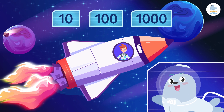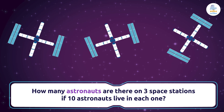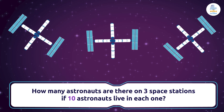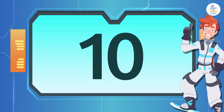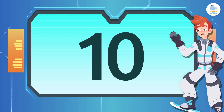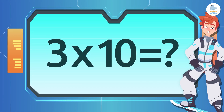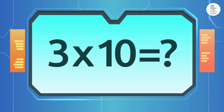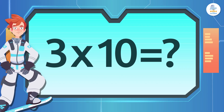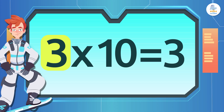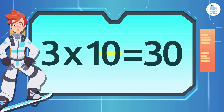Here we go! How many astronauts are there on three space stations if ten astronauts live in each one? Let's start by learning the trick to multiply any number by ten. We have to multiply three times ten. We can do traditional multiplication, which takes longer, or we can use our trick: we start by putting the number three and then adding a zero, since ten has only one zero. Easy, right?